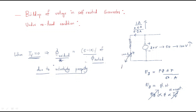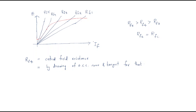Now we have different field resistance conditions. If we are using a variable resistance RF that can be varied, we plot field current on the x-axis and generated EMF on the y-axis. When using high field resistance RF1, the waveform follows a particular pattern. For RF4 the EMF decreases; for RF3 and RF2 it slowly increases. Each resistance value gives a different curve.